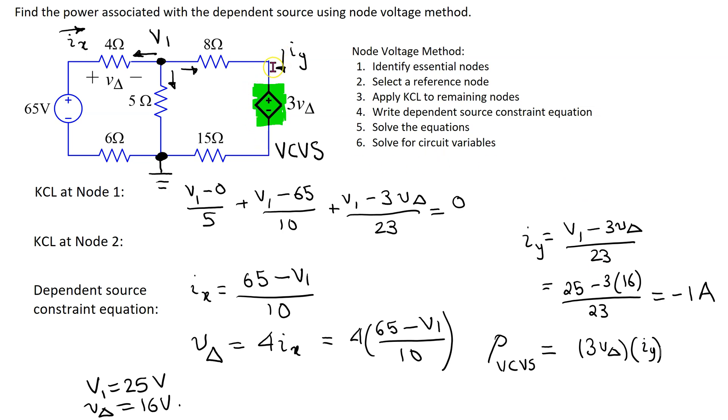In this case the current is entering the terminal marked with a plus sign. So we use the power calculation with a plus sign and then substituting values we get 3 times 16 and minus 1. So this gives minus 48 watts. So this negative answer means that this voltage controlled voltage source is actually supplying power in this circuit.